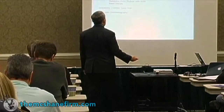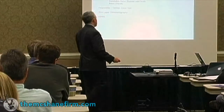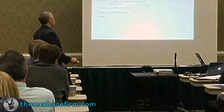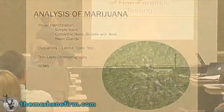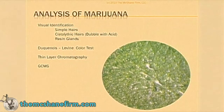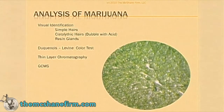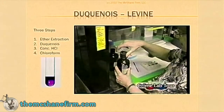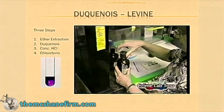Moving right along — we had talked before about the analysis of marijuana and particularly synthetic hairs. These are different non-forensic methods of testing, the botanical ones we talked about before. I want to expose you to thin layer chromatography and exactly what that is. Thin layer chromatography is very easy to understand.